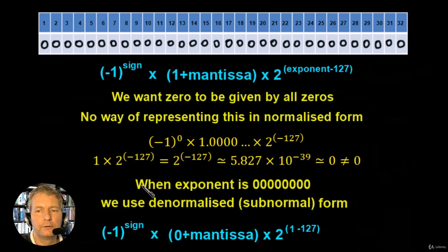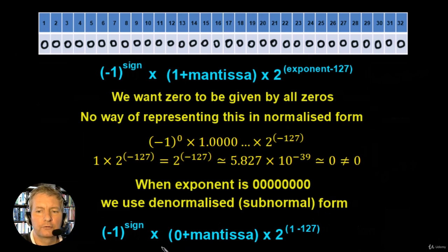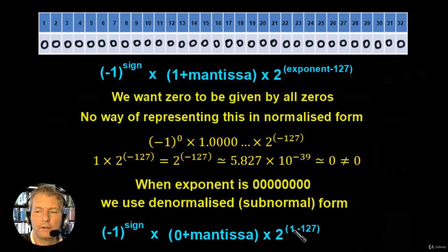So what we do is we introduce something called the subnormal form. Whenever all of the exponent values are 0 — the exponent is given by 8 zeros — we introduce the subnormal form. The subnormal form is written like this: the sign remains the same. The mantissa is different because we don't have the plus 1; we just leave that as 0. And the bias changes — instead of being the exponent minus 127, it's going to be 1 minus 127, which in effect would be minus 126.